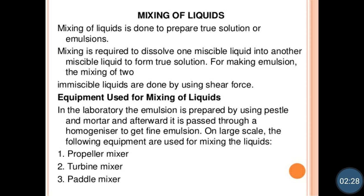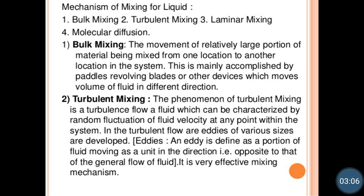The next topic is the equipment used for the mixing of liquids. In the laboratory, emulsions are prepared by using pestle and mortar, and afterward passed through a homogenizer to get a fine emulsion. On industrial or large scale, different equipment is used like propeller mixer, turbine mixer, and paddle mixer, which we will discuss in the later part of this chapter.